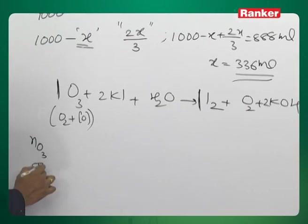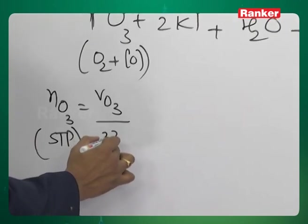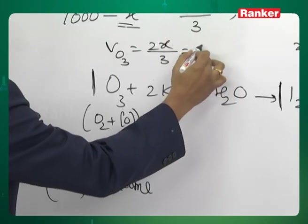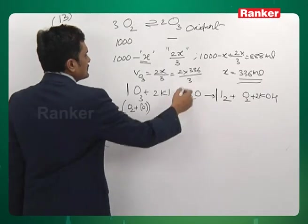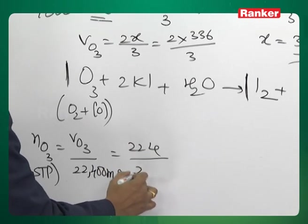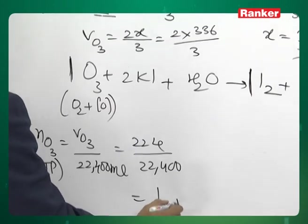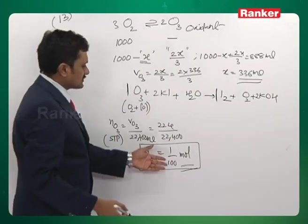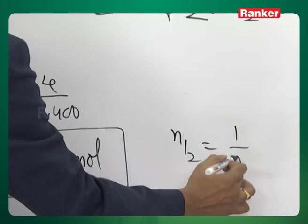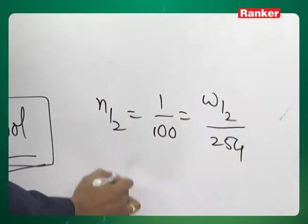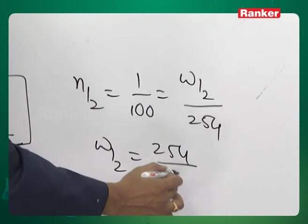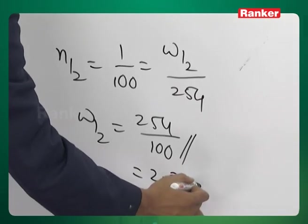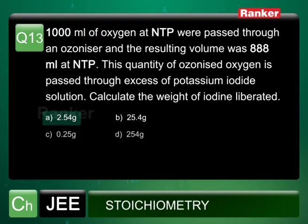Moles of ozone = volume of ozone / 22400 ml. Volume of ozone = 2x/3 = 2 × 336/3 = 224 ml. So moles of ozone = 224/22400 = 1/100 mol. For every 1 mole of ozone, 1 mole of I₂ is formed, so moles of I₂ = 1/100. Weight of I₂ = moles × molecular weight of I₂ = 2.54 gram. The answer is 2.54 gram, option A.